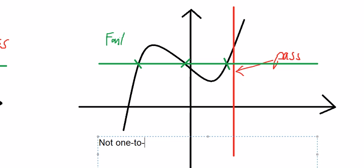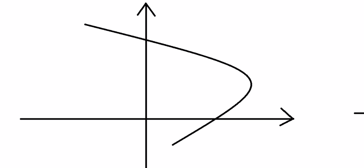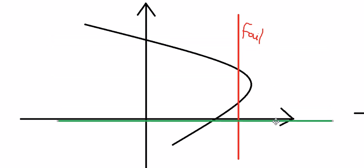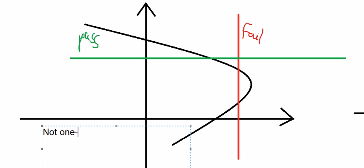So this is not one-to-one. Now let's go to the next one. I draw the red line and move it — they have only one intersection, so this is pass. Now with the green line, I move up and down and they have only one intersection, so this is pass. But they fail for the horizontal line test, so we can say this is not a one-to-one function.